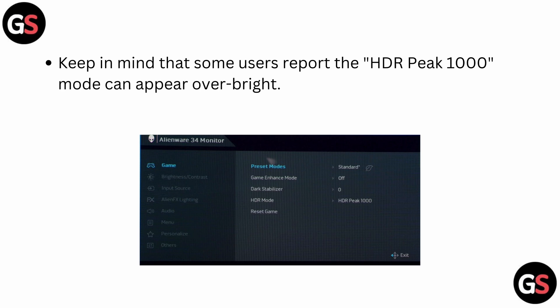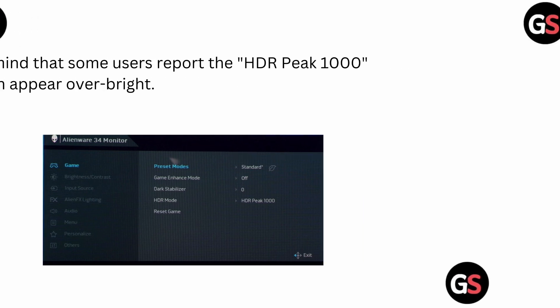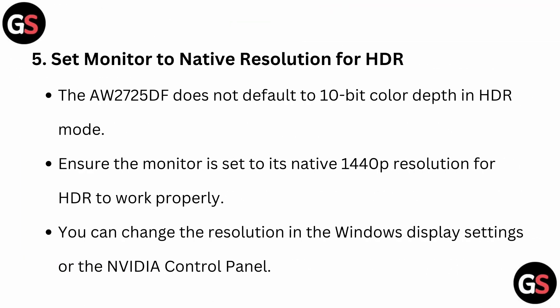Step 5: Set the monitor to native resolution for HDR. The AW2725DF does not default to 10-bit color depth in HDR mode. Ensure the monitor is set to its native 1440p resolution for HDR to work properly. You can change the resolution in the Windows Display Settings or the NVIDIA Control Panel.